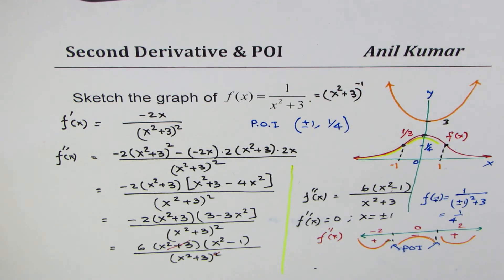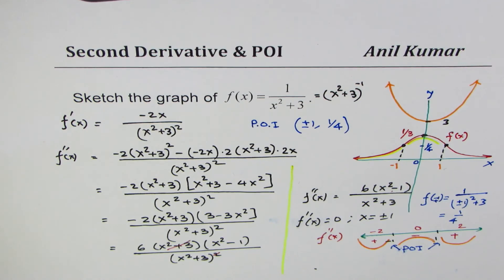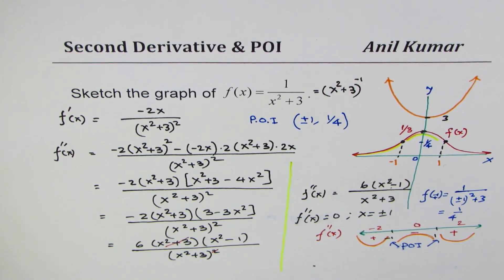That's the beauty of the second derivative — it gives you the concavity of the curve, the change of concavity, and thereby the points of inflection, which are critical for sketching accurate graphs. I hope this example demonstrates the significance of the second derivative. If you like it, feel free to share comments. Thanks for watching.